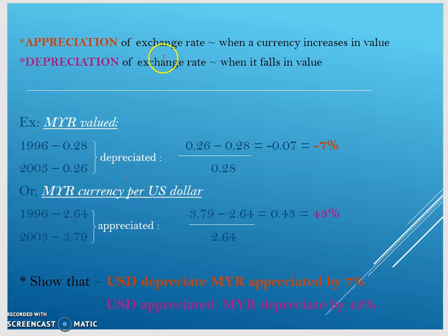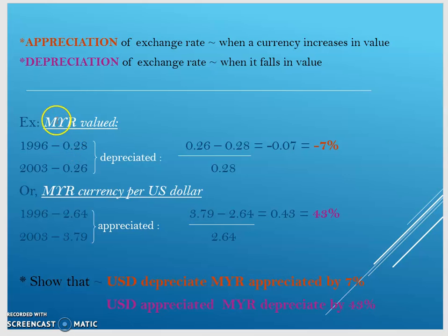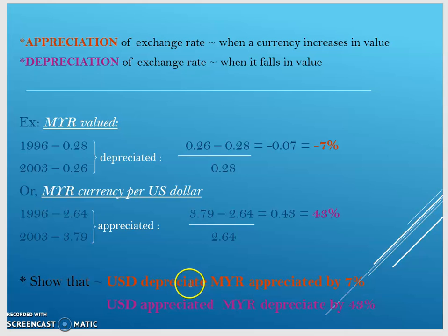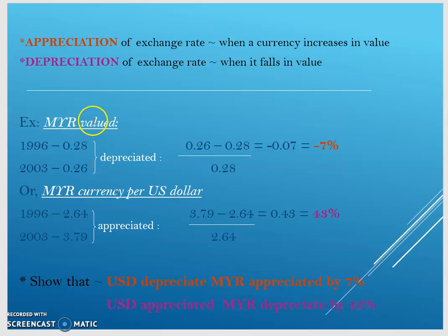Appreciation and depreciation — appreciation is when a currency increases in value, and depreciation is when it falls in value. For example, in 1996 the value of the Malaysian Ringgit was 28 cents, and in 2003 it was 28 cents — meaning it depreciated by 7 percent. This shows that the USD depreciated by 7 percent, while the Malaysian Ringgit appreciated by 7 percent, since the US is the home country and Malaysia is the foreign country.